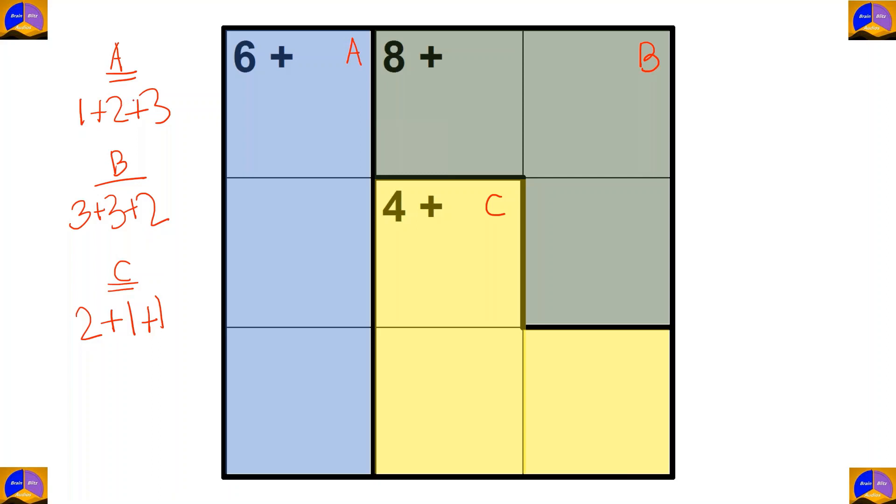Now, let's start solving. In cage B it is 3 plus 3 plus 2. Now, you know that no numbers can be repeated in any row or column. So, 3, 3, 2 cannot be here. That format will not come.